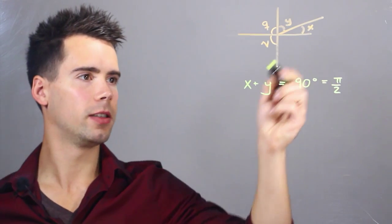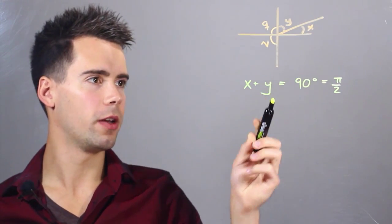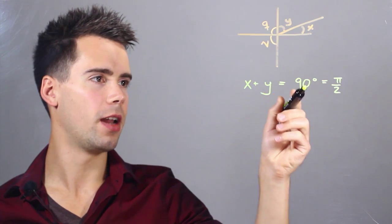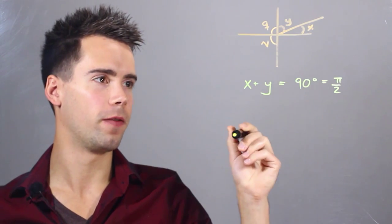So if we were given that x is equal to 45 degrees, we could find that y is equal to 90 minus x. So y is also equal to 45 degrees.